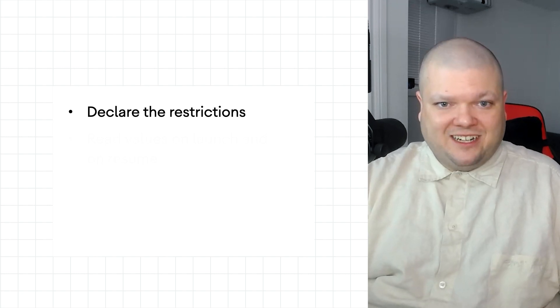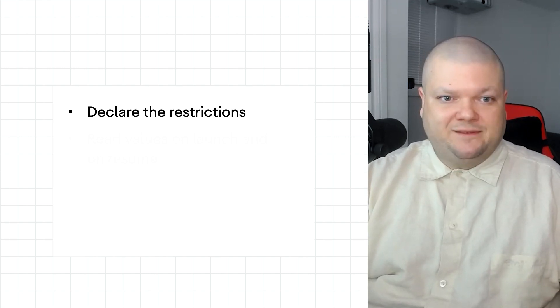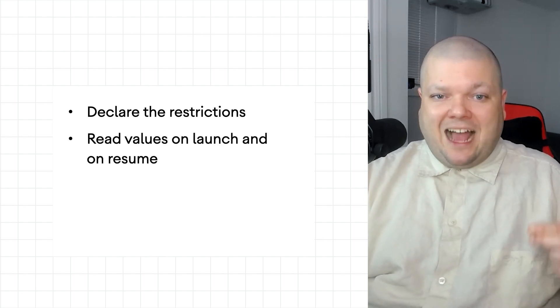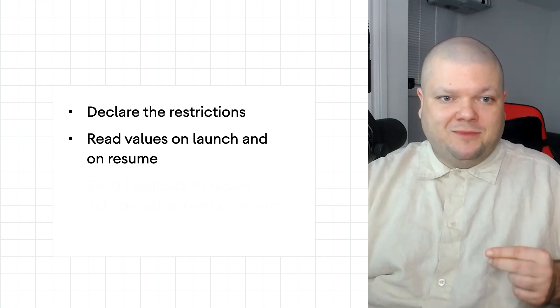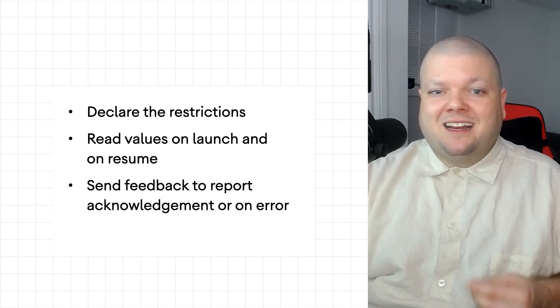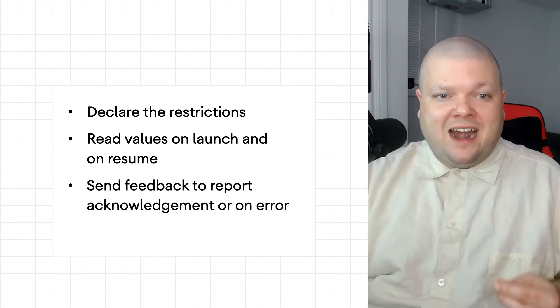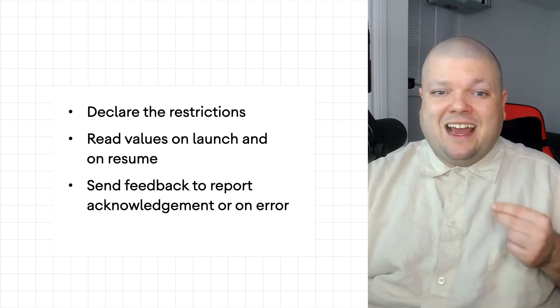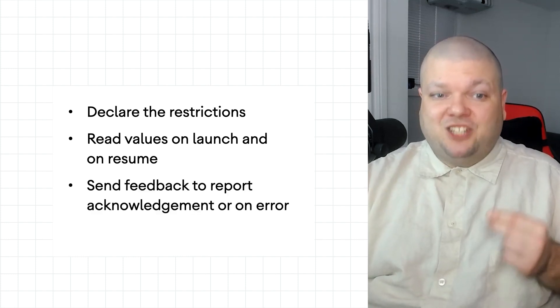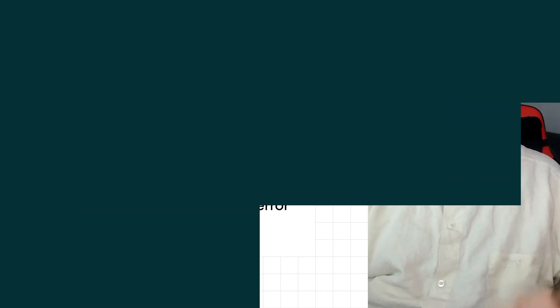To use managed configurations in your app, you'll need to declare those configurations in a restrictions XML file, read the values at app launch and resume, and then send back an acknowledgement or error code using the enterprise feedback jetpack library.